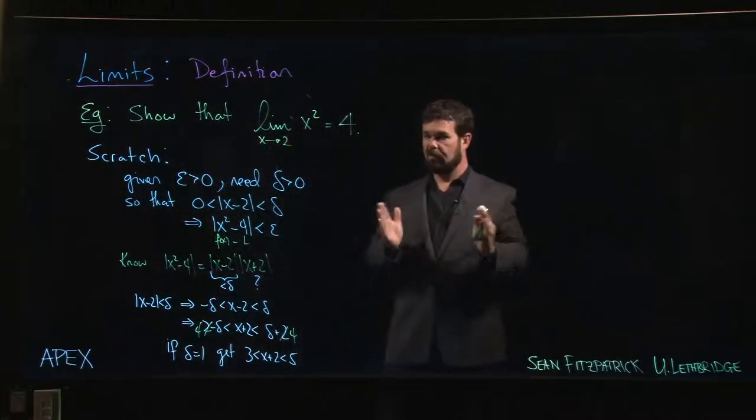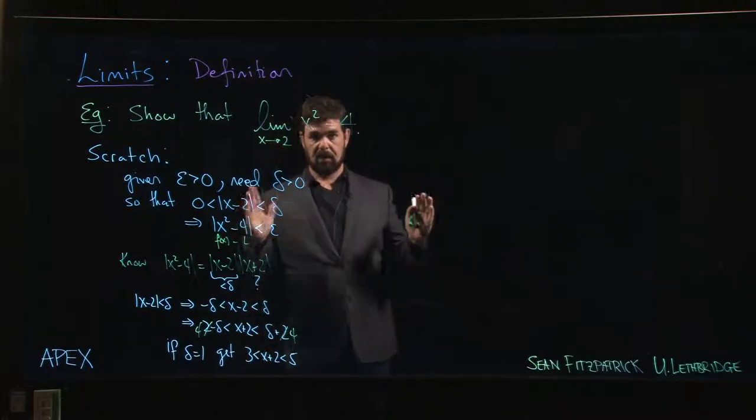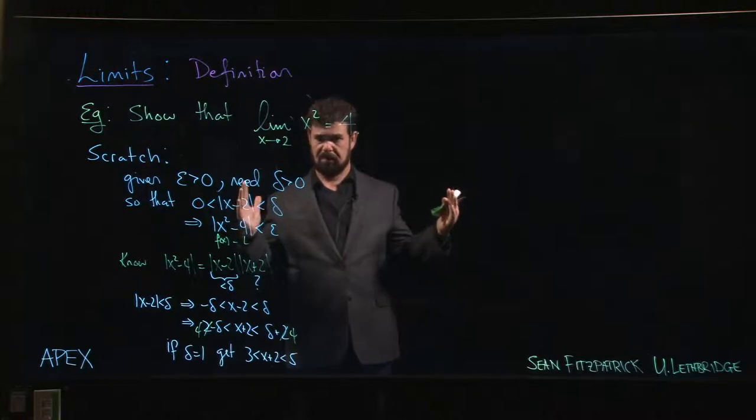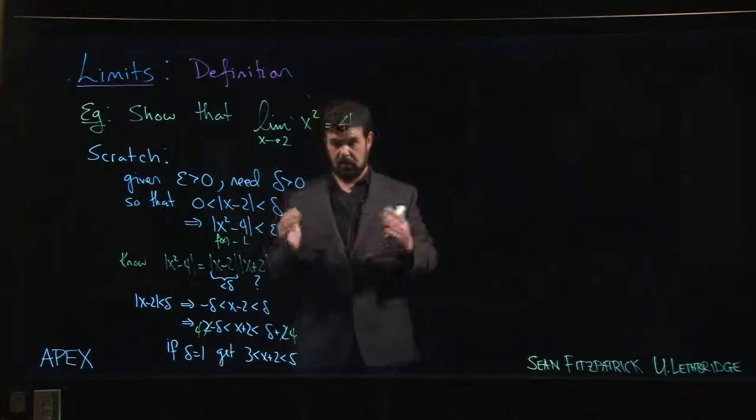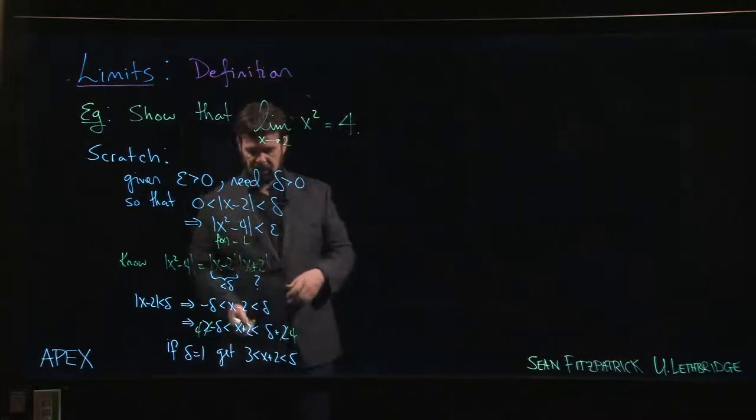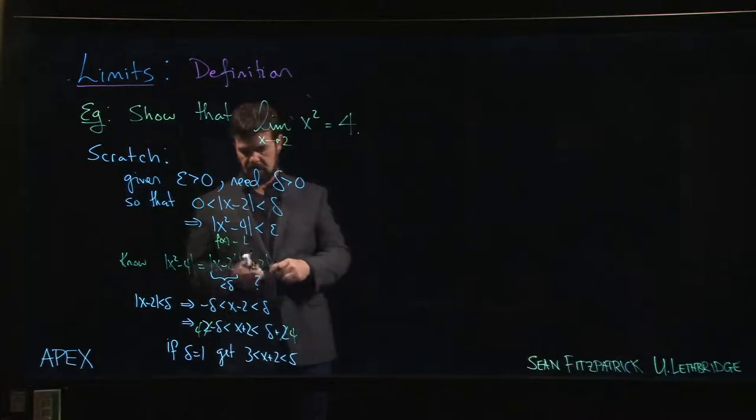And you can see that if you chose a smaller delta, the 3 and the 5 are both going to get closer to 4. So we'd be narrowing the gap. So we're being pretty conservative here. We're allowing a fairly widespread for values. So x + 2 is somewhere between 3 and 5. But in particular, it can't be any bigger than 5.